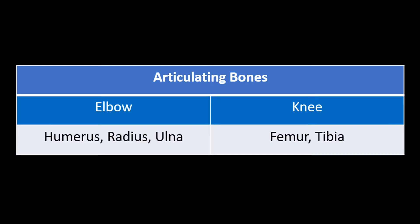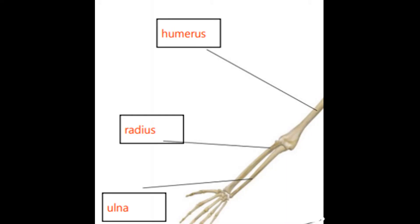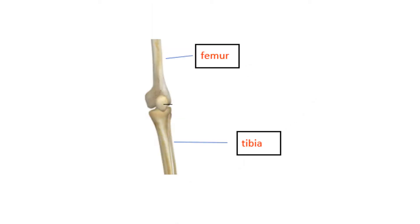We also need to know the names of the bones which meet at each hinge joint — these are known as the articulating bones. At the elbow joint, the articulating bones are the humerus, which is the upper arm, and the ulna and radius, which are the bones of the lower arm. At the knee, the articulating bones are the femur, which is the bone of the upper leg, and the tibia, which is one of the bones of the lower leg.